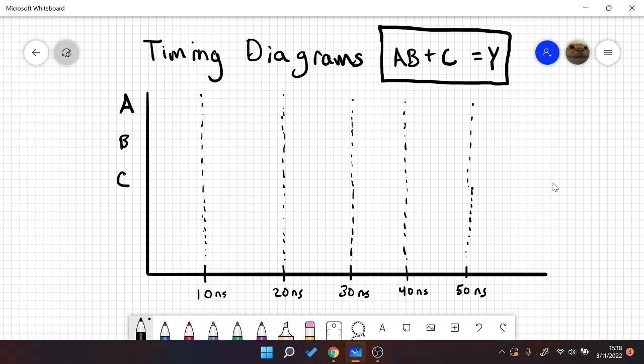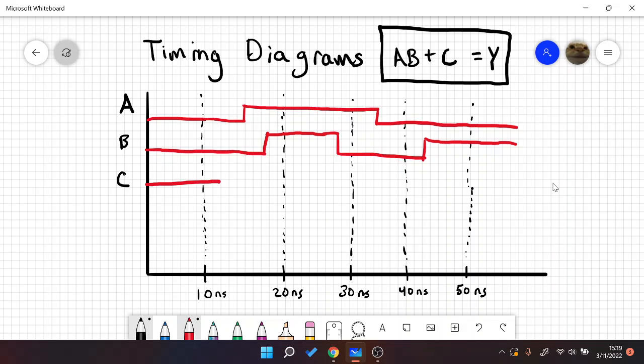So first, let's define our signals A, B, and C. These will most likely be given to you randomly, or they'll ask you to find the signals A, B, and C from Y. So let's say these signals are something like this. We'll do something like this. And finally, for C, we'll do something like this.